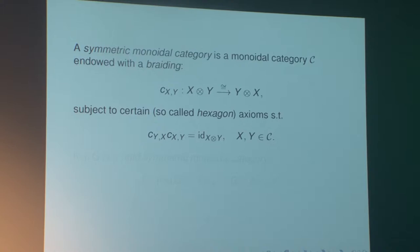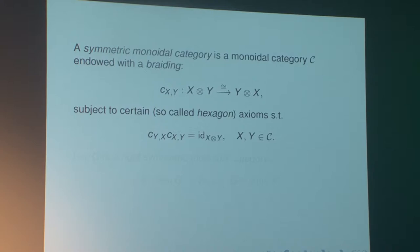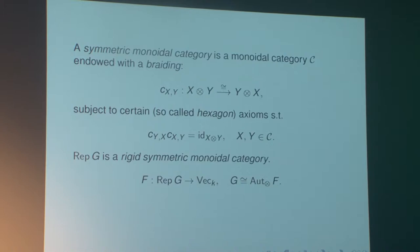With this flip isomorphism it becomes what is called a symmetric monoidal category. This is a monoidal category endowed with a braiding C, which is a natural isomorphism between the tensor product and the opposite tensor product, satisfying certain hexagon axioms of compatibility with the tensor product, such that the square of the braiding — the composition of C_{XY} with C_{YX} — is the identity of X ⊗ Y for all objects X and Y. The category of finite dimensional representations of a finite group G is a symmetric fusion category.